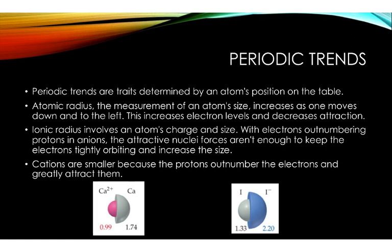Periodic trends. Periodic trends are traits determined by an atom's position on the table. Atomic radius, the measurement of an atom's size, increases as one moves down and to the left. This increases electron levels and decreases attraction.